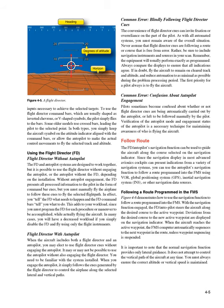Follow Route. The FD/autopilot's navigation function can be used to guide the aircraft along the course selected on the navigation indicator. You can use the autopilot's navigation function to follow a route programmed into the FMS using VOR, GPS, INS, or other navigation data sources. With the navigation function engaged, the FD/autopilot steers the aircraft along the desired course to the active waypoint. When the aircraft reaches the active waypoint, the FMS computer automatically sequences to the next waypoint unless waypoint sequencing is suspended. The normal navigation function provides only lateral guidance — it does not attempt to control the vertical path of the aircraft.